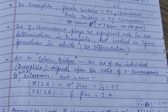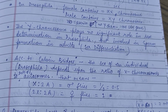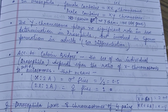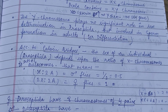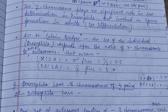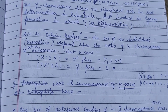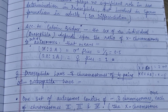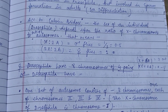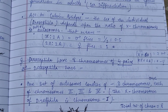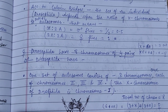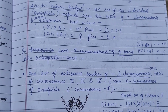In XO, there is no Y chromosome and no sry-like gene present on that chromosome. The Y chromosome plays no significant role in sex determination in Drosophila but is involved in sperm formation in adults — this is known as sex differentiation. According to Calvin Bridges, the sex of an individual Drosophila depends upon the ratio of the X chromosome to the sets of autosomes.